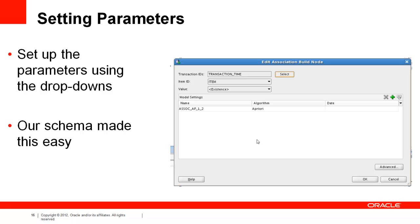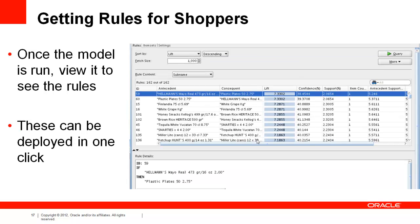The parameters for association rules need to be set via drop-down menu, but our schema makes this simple. We use transaction time as the transaction ID — that is, all the things in a basket happened at the same checkout time. The item ID is, not coincidentally, the item column in our table.